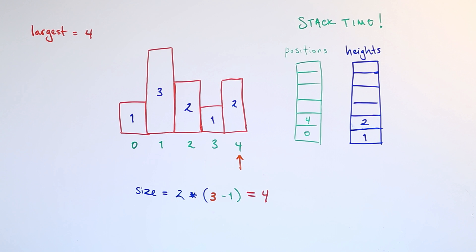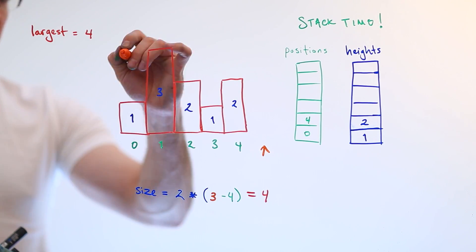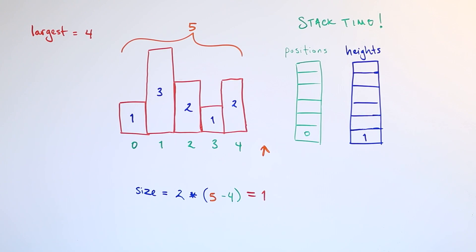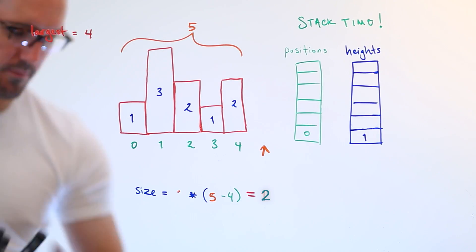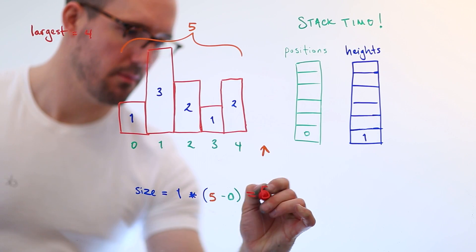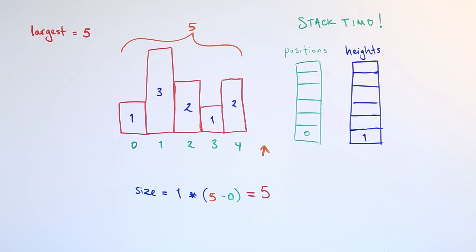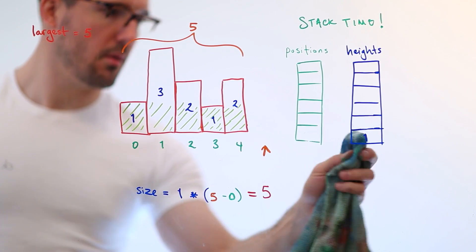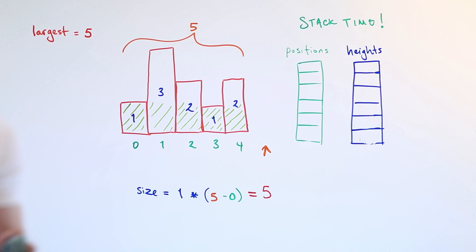We have two rectangles that have been open but not shut. The height-two rectangle started at position four; we're now at width five. Five minus four equals one, so two times one is two — just a two-by-one rectangle, not interesting. But then the height-one rectangle started way back at position zero and has been carried along since the beginning. Five minus zero equals five, so one times five means we've found our biggest rectangle: a one-by-five with area five, clearly bigger than the two-by-two. Let me color it in — there's that wonderful height-one rectangle that's been lurking the whole time.